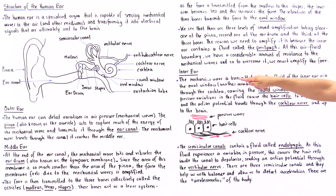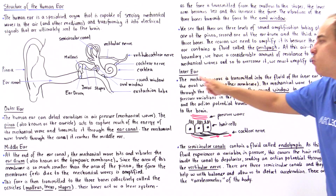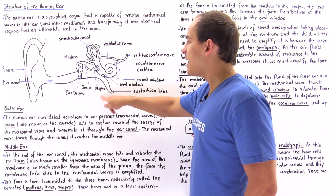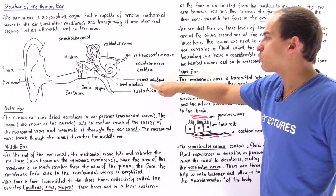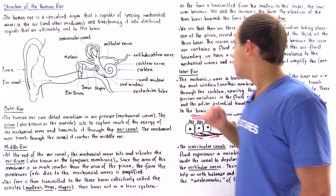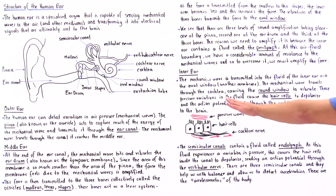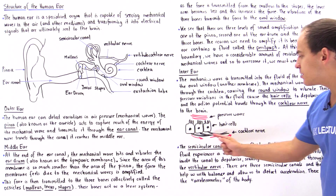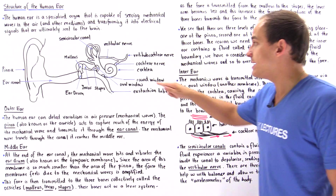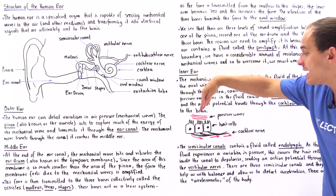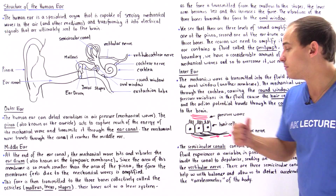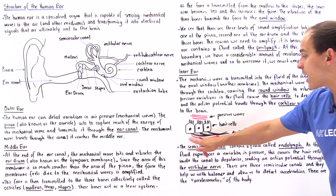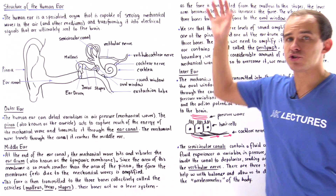Inside the inner ear, the mechanical wave is transmitted into the fluid via the oval window — the membrane connected to the stapes — which begins to vibrate and sends out a pressure wave that eventually vibrates the round window, found just below the oval window. These pressure variations in the fluid cause the hair cells to depolarize, and the action potential travels through the cochlear nerve up to the brain. The microvilli — the hair-like extensions — vibrate, causing depolarization of the cell membrane, which initiates an action potential that then travels through the axons of the cochlear nerve into the brain.